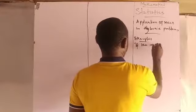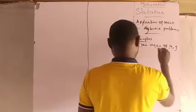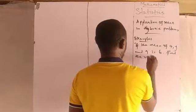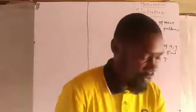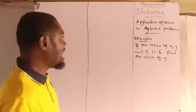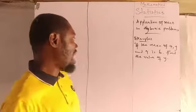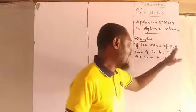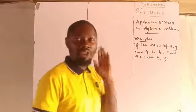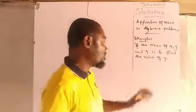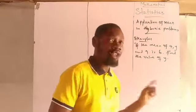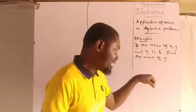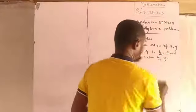Here is our first example: if the mean of 4y and 9 is 6, find the value of y. From the question given to us, it is algebraic because we have a letter — an unknown variable we have to find. The mean has already been mentioned: the mean of 4y and 9 is 6, which means the mean is 6.